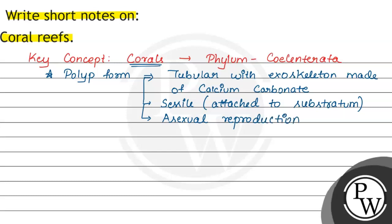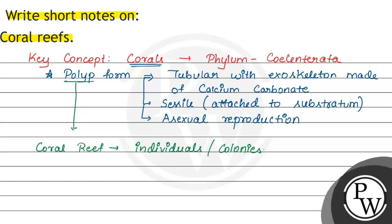The polyp can be individual or form colonies. In coral reefs, we get a polyp aggregation. Individual aggregation is also possible. Individual or colonies of polyps, which belong to Cnidaria, form what we call a coral reef.